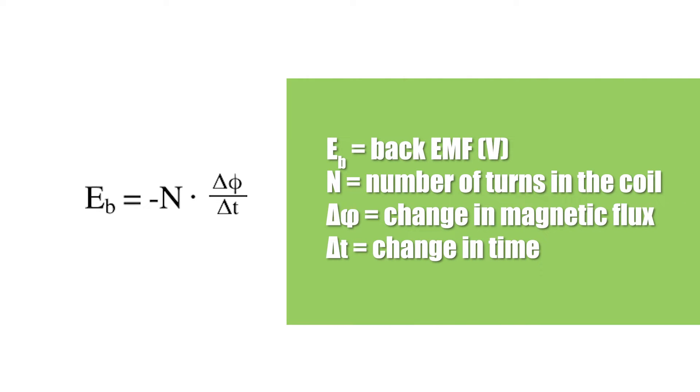Regardless of how the change is produced, whether it's by moving the magnet and coil relative to each other or by changing the magnetic field, a voltage will be generated. The equation for this induced voltage, known as back EMF, is shown here.